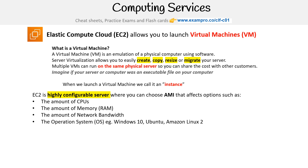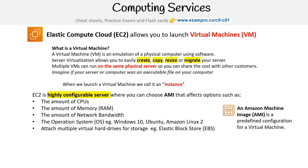You can also choose the operating system, whether it's Windows, Ubuntu, or Amazon Linux, as well as the ability to attach multiple virtual hard drives for storage via Elastic Block Store. The Amazon Machine Image is a predefined configuration for a VM — just remember that.